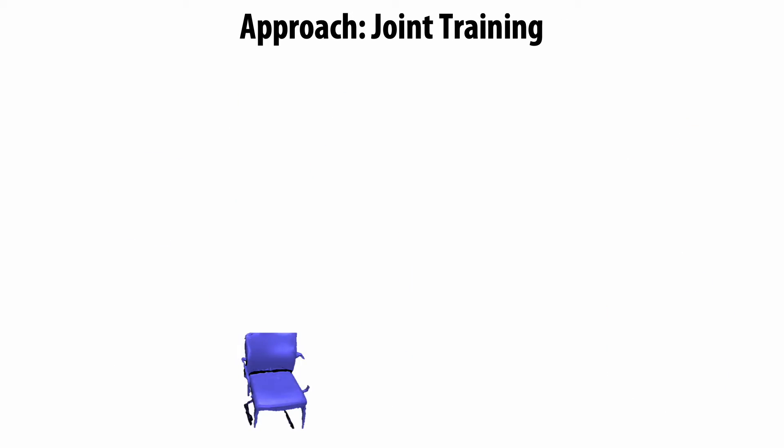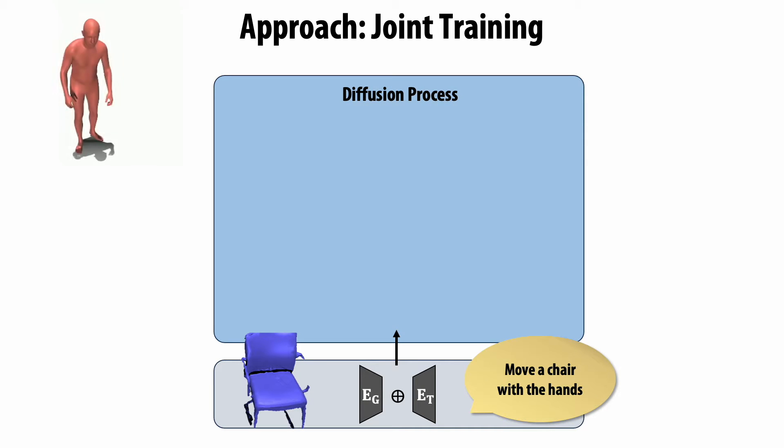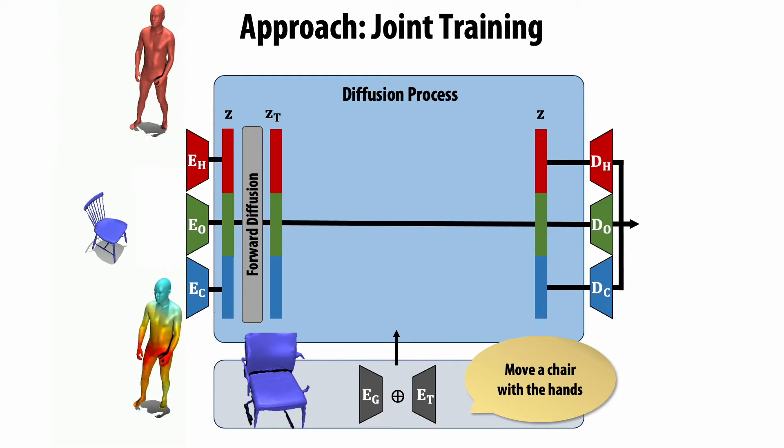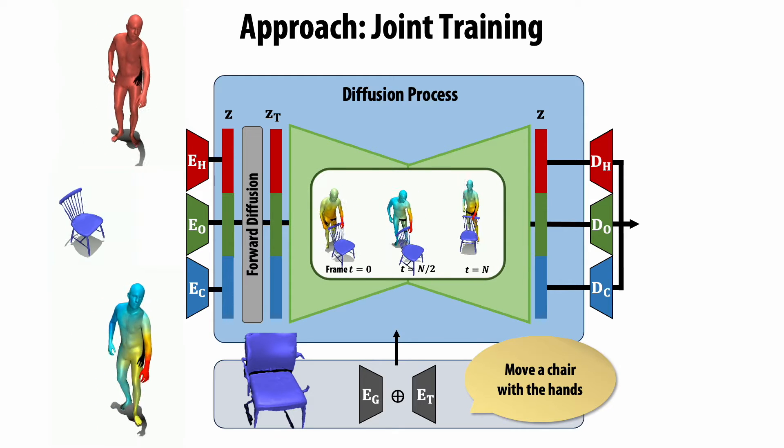We use the static object geometry and text as condition in a denoising diffusion process. This adds noise to the human body, object motion, and contact sequences during training, and trains a network to predict the denoised version of all three modalities.